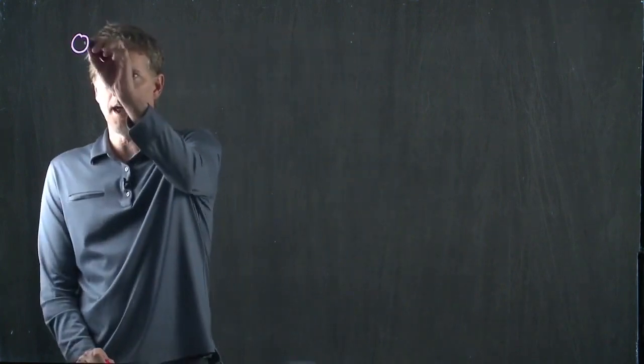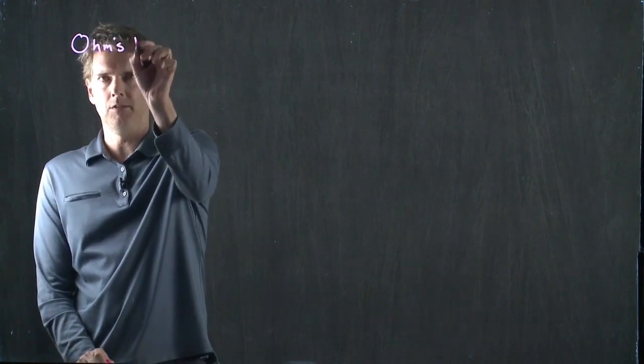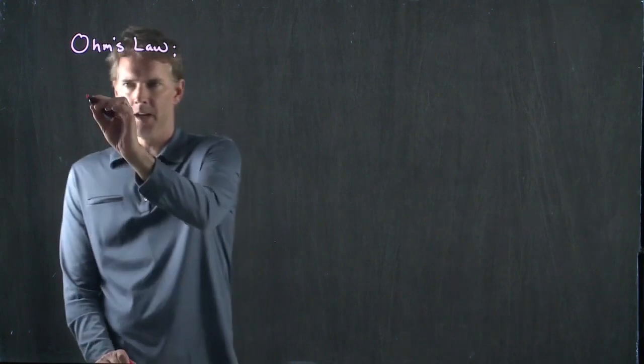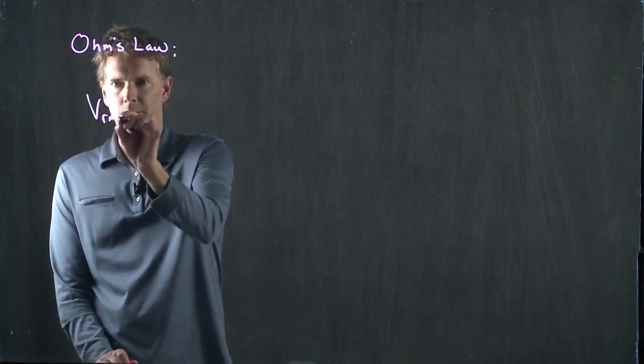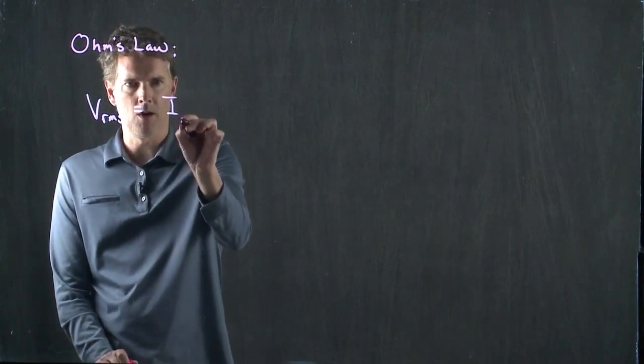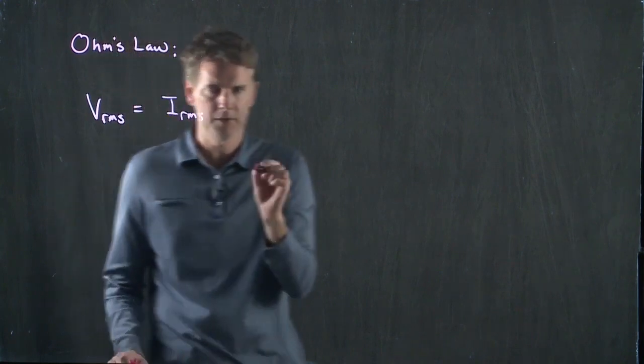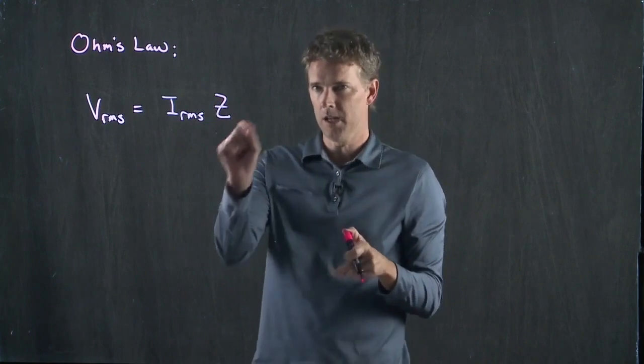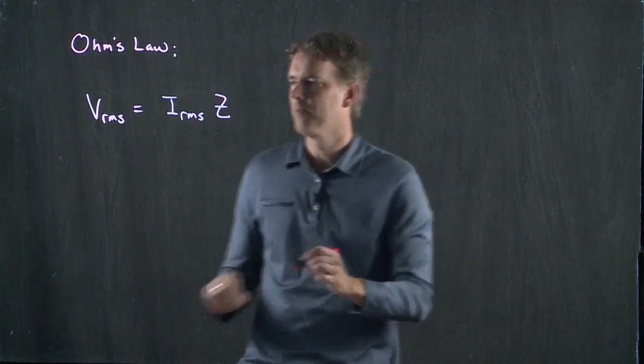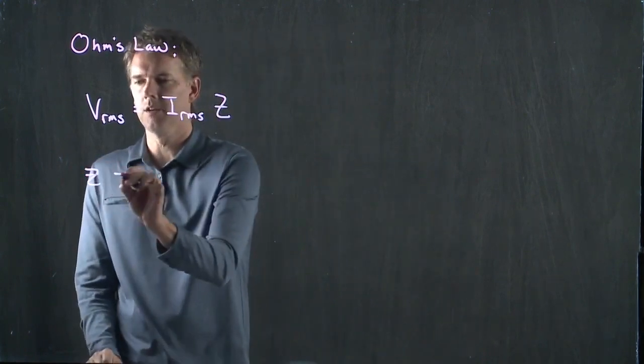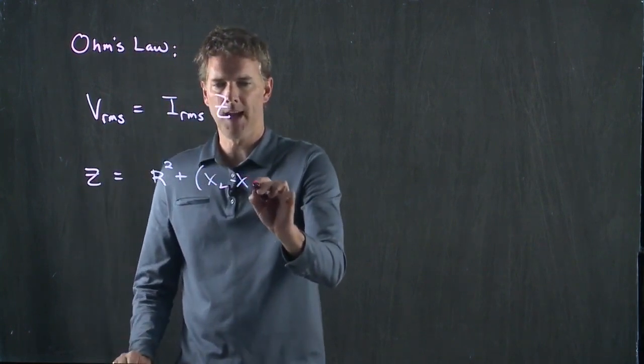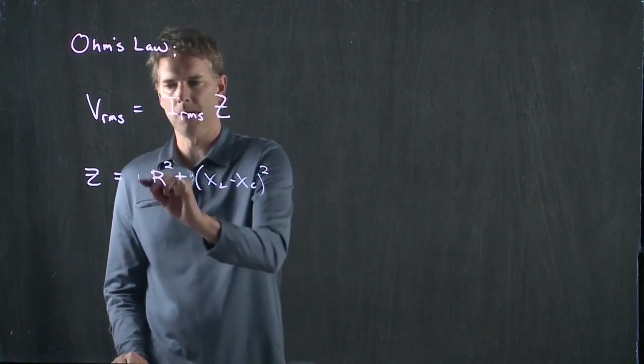So when we think about Ohm's law now in these complicated circuits, first off we realize that we're usually talking about RMS voltages and RMS currents, and we're going to multiply by Z, this complex impedance, where Z is again R squared plus XL minus XC quantity squared.